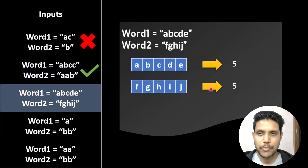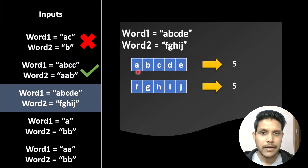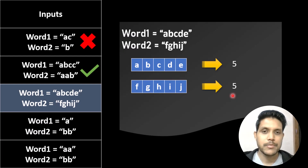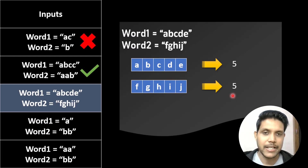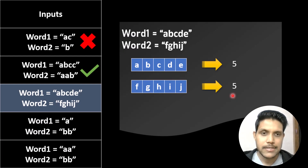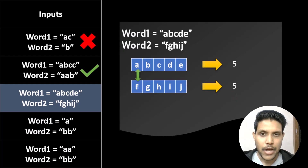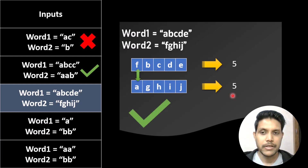In the third example, the number of distinct characters between the two words is initially equal. But we cannot directly return true because the question requires exactly one move. We need to find two indices, swap them, and then check whether the distinct character counts are equal. We check a random value, swap them, and the number of distinct characters between the two words are still equal, so we return true.